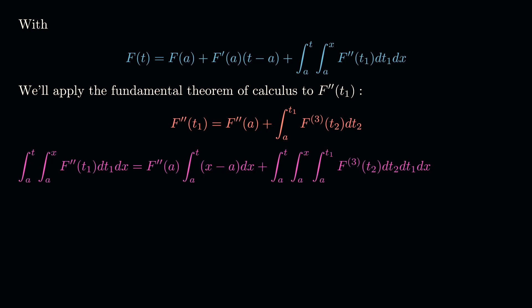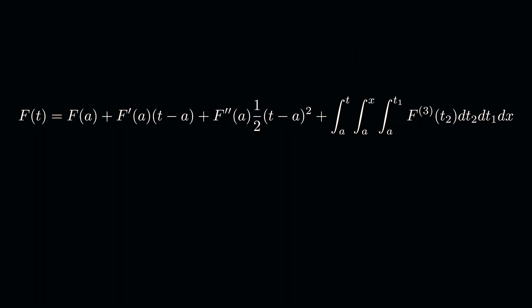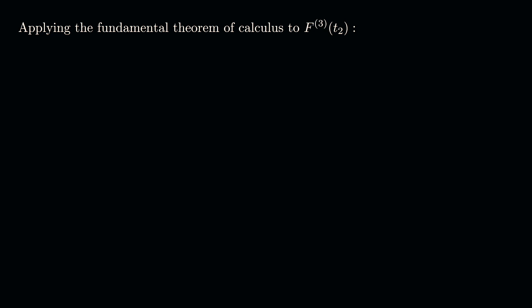We just need to integrate (x minus a) with respect to x, which gives one-half (t minus a) squared. Inserting this into the primary expression, we get: f(t) equals f(a) plus f'(a)(t minus a) plus f''(a) times one-half (t minus a) squared, plus the remaining integral term.